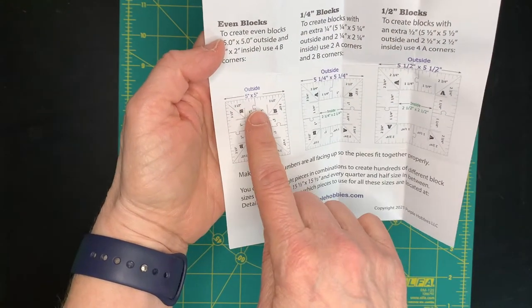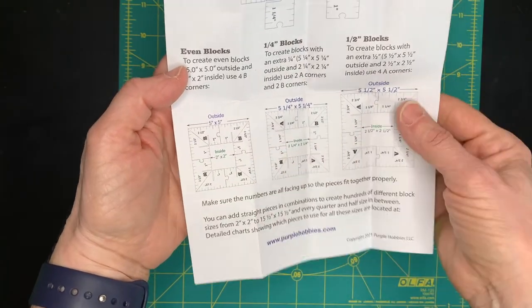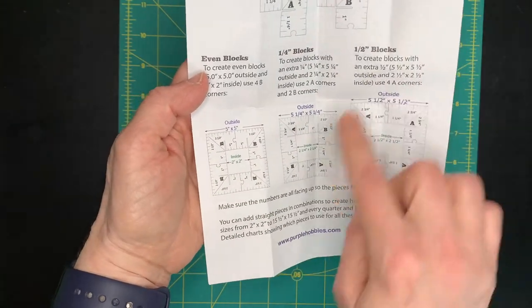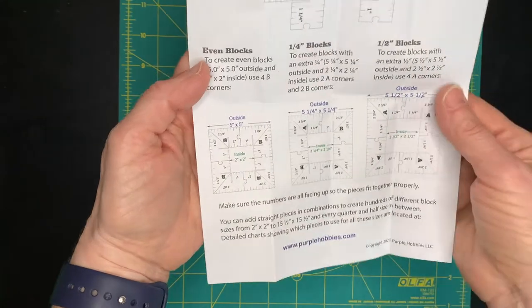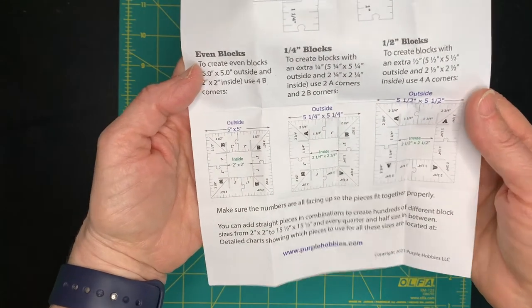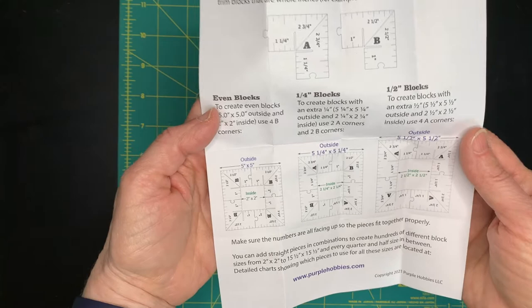So if you want your block to be five by five, five and a quarter by five and a quarter, or five and a half by five and a half, this is how you mix up the corners so that you can mix and match the corners to get the exact size that you want.